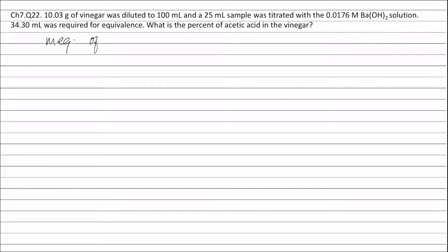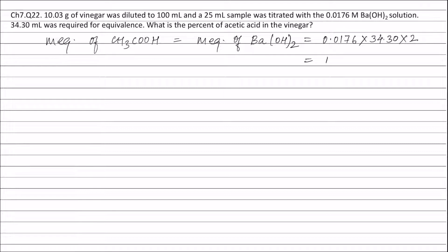Milliequivalents of acetic acid will be equal to milliequivalents of barium hydroxide. This is equal to molarity of barium hydroxide, that is 0.0176, into volume of barium hydroxide, that is 34.30 ml, into valency factor of barium hydroxide, that is 2. This is equal to 1.207 milliequivalents.